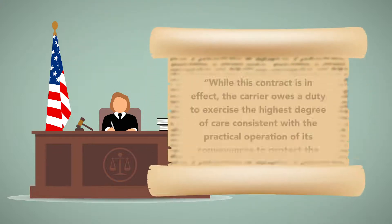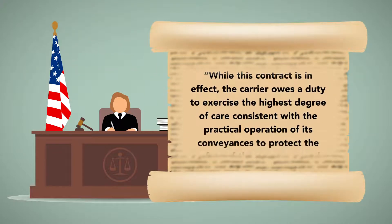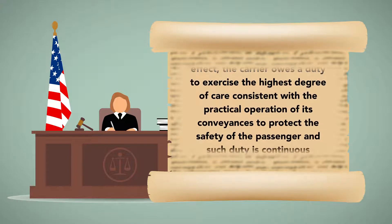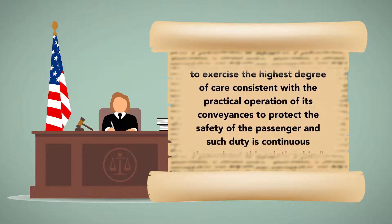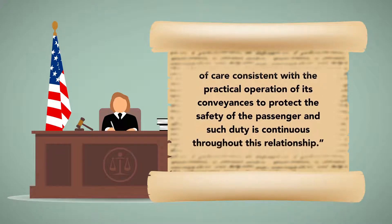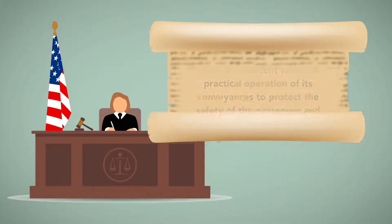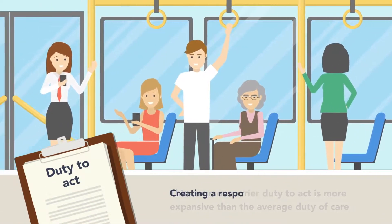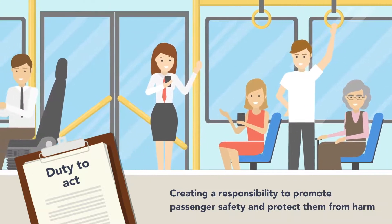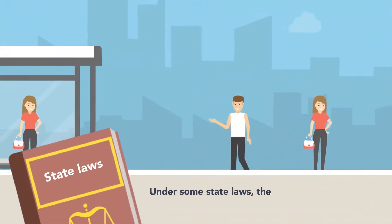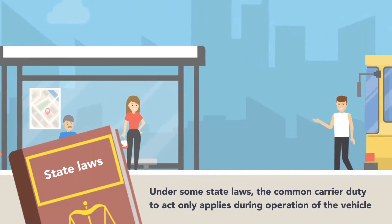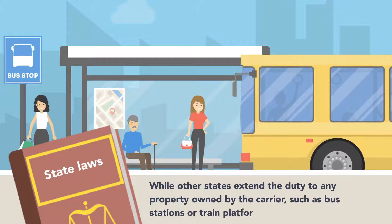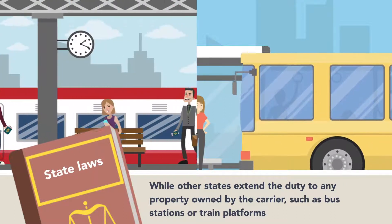The court ruled that the passenger's decision to pay for the carrier's service created a duty between the carrier and the passenger. In its ruling, the court stated: while this contract is in effect, the carrier owes a duty to exercise the highest degree of care consistent with the practical operation of its conveyances to protect the safety of the passenger, and such duty is continuous throughout this relationship. The common carrier duty to act is more expansive than the average duty of care, creating a responsibility to promote passenger safety and protect them from harm. Under some state laws, the common carrier duty to act only applies during operation of the vehicle, while other states extend the duty to any property owned by the carrier, such as bus stations or train platforms.